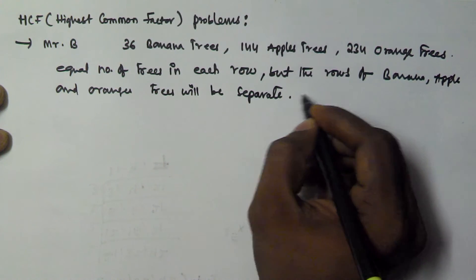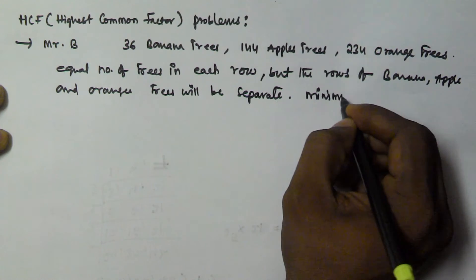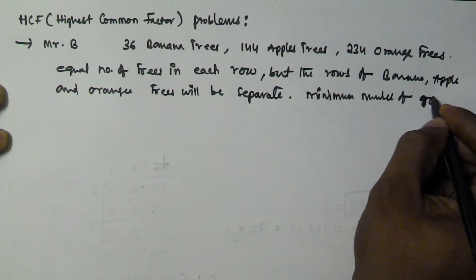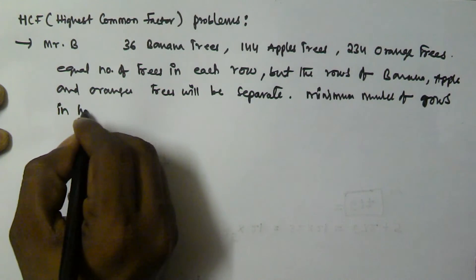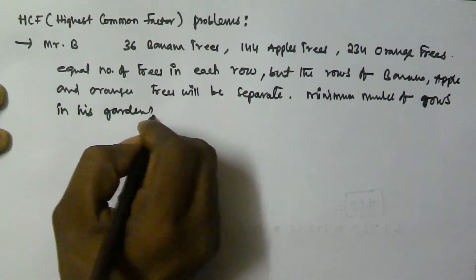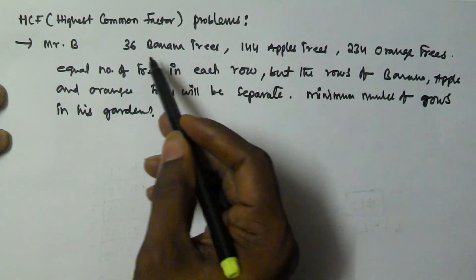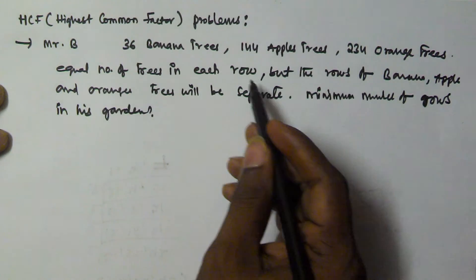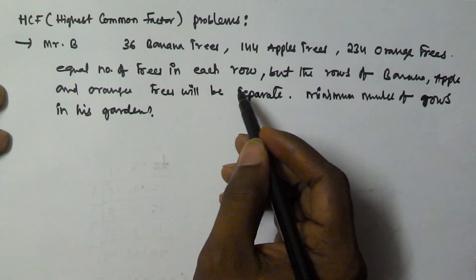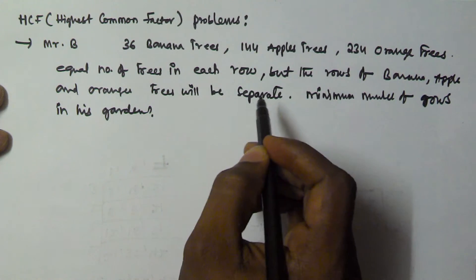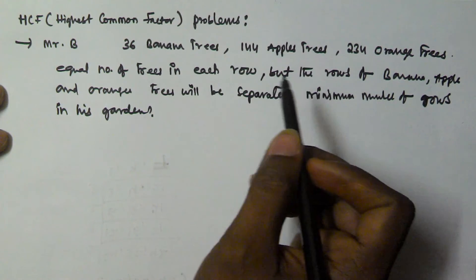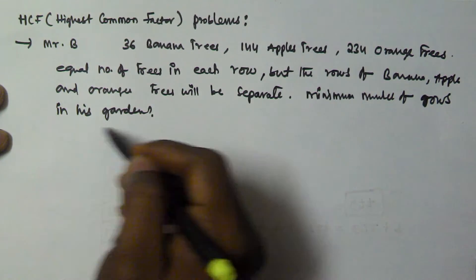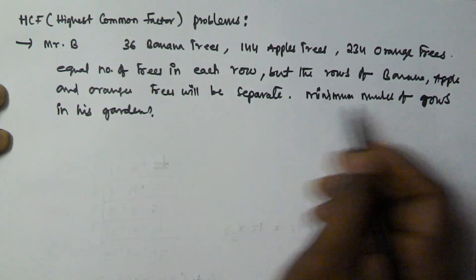We have to find the minimum number of rows in his garden. So to recap: Mr. B wants to plant 36 banana trees, 144 apple trees, and 234 orange trees. Each row must contain an equal number of trees, and each row must contain only one type of tree — banana, apple, or orange.